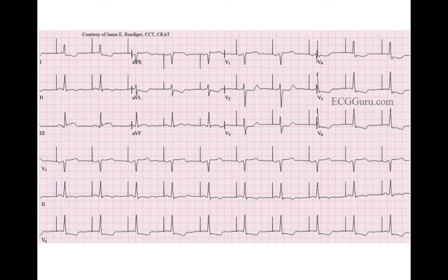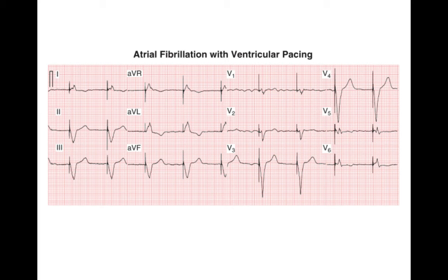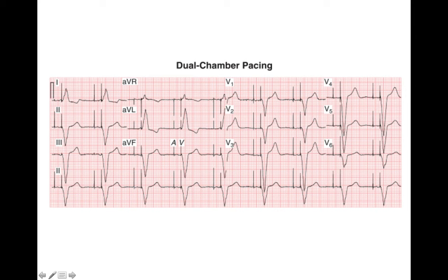This is an example of atrial pacing. Here we see pacer spikes preceding the P wave — a pacer spike followed by a P wave, and then a conducted QRS. This could be a dual chamber pacemaker where the atrium is pacing but the ventricle is not pacing because there's normal conduction, or this could be an atrial only pacemaker — you can't tell from this ECG. Here's an example of ventricular only pacing: the person has atrial fibrillation in the background and you only see ventricular pacing spikes, with a QRS after every spike. This is an example of atrial and ventricular pacing — a dual chamber pacemaker with a lead in the atrium and a lead in the ventricle. There's a spike that paces the atrium with a P wave following, and a spike that paces the ventricle with a QRS following the second spike. This is dual chamber pacing.